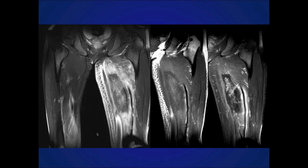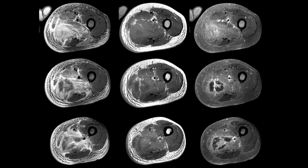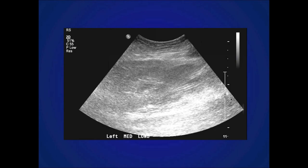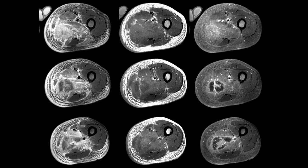We see marked edema involving the superficial soft tissues and the deep muscular tissues of the thigh on the post-contrast images. There's marked edema throughout the superficial soft tissues and the hamstrings. There appears to be a rim-enhancing collection within the center — I don't see a focal fluid collection on fluid-sensitive sequences, but that low signal area could be blood products or necrosis.